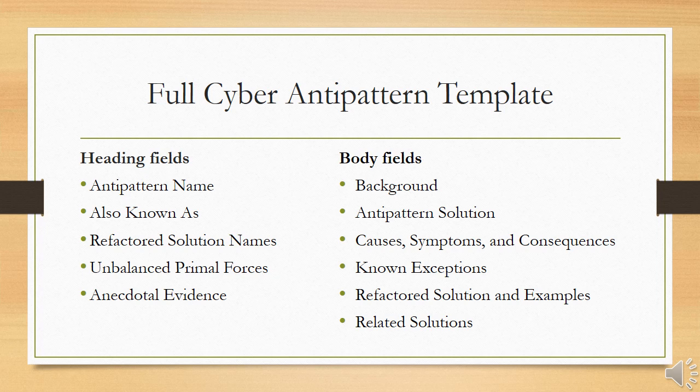Causes, symptoms and consequences: this bulleted section lists the typical causes, common symptoms and resulting consequences of the anti-pattern solution, making it easier to recognize the anti-pattern and understand why its replacement is necessary. Known exceptions: if there are situations where the anti-pattern solution might be desirable, this section identifies them — for example, if the consequences are acceptable in a given context or if replacement is not worthwhile.